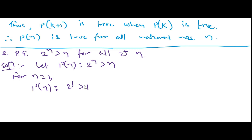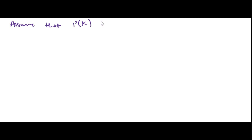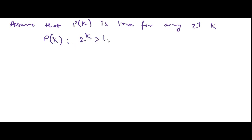Now the proof is easy. Let P(n) be the statement such that 2^n > n. For n = 1: P(1) gives 2^1 > 1, i.e., 2 > 1, which is true. So P(1) is true. Now we need to assume P(k) is true for any positive integer k, i.e., 2^k > k. Let this be equation number 1.